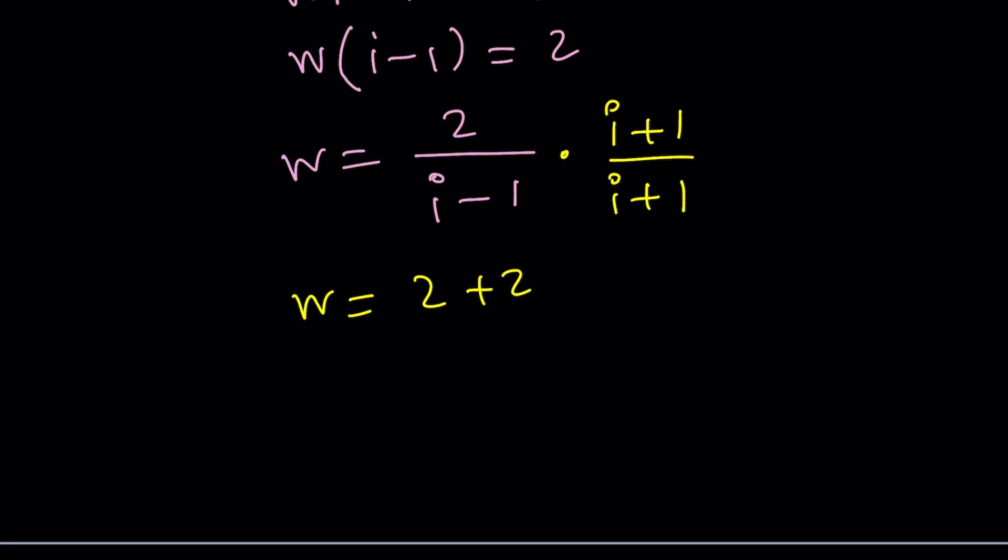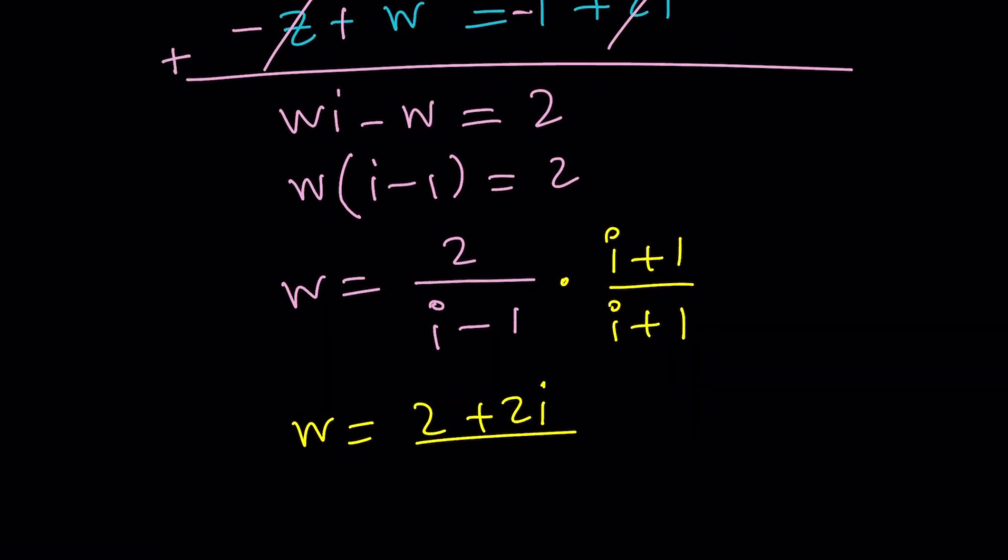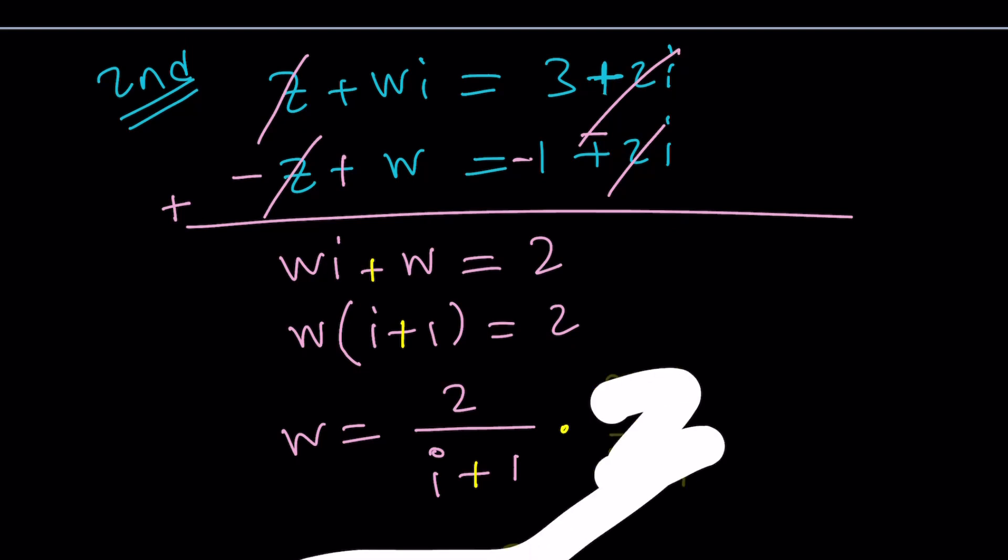We can still multiply by i plus 1 because the difference of two squares is just awesome. This gives us 2 plus 2i and then divided by i squared. Here you have to be a little careful, right? And by the way, let me make sure I did it correctly. Nope, I didn't do it correctly. It's supposed to be a plus sign.